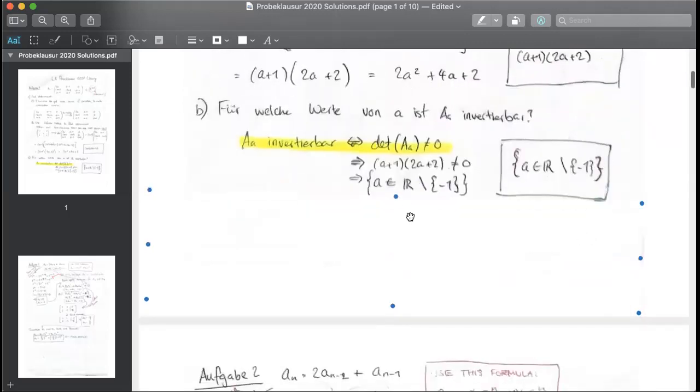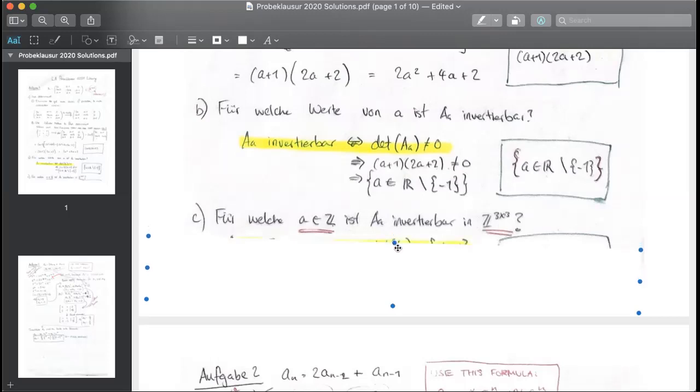The next part, they ask for which value of A that is an integer is the matrix invertible in the field of three by three integers. I'm not going to explain why that is. You just have to remember another rule.